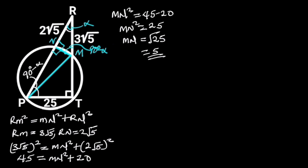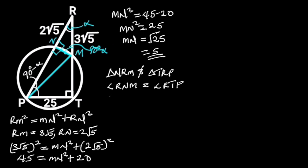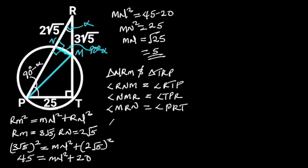Reason: the sum of angles in a triangle is 180 degrees. Comparing triangle NRM and triangle TRP, observe that angle RNM is equal to angle RTP, angle NMR is equal to angle TPR, and angle MRN is equal to angle PRT. This shows that triangle NRM is similar to triangle TRP.